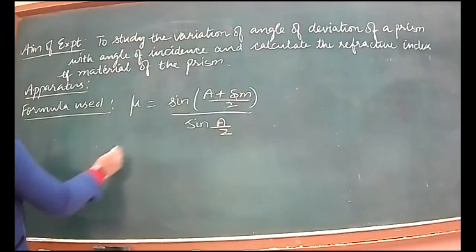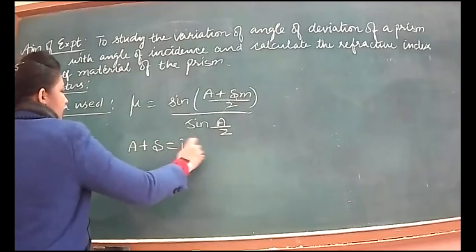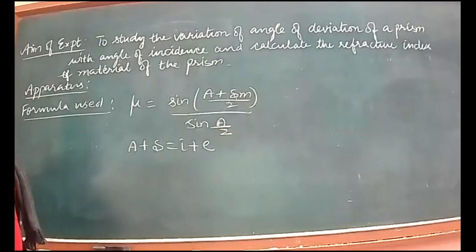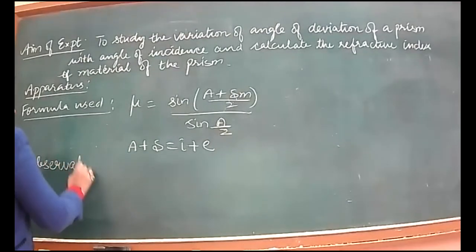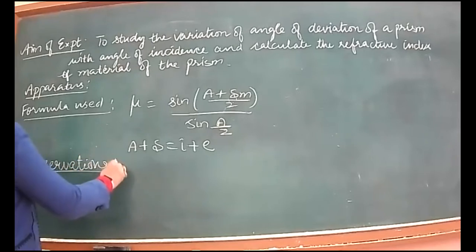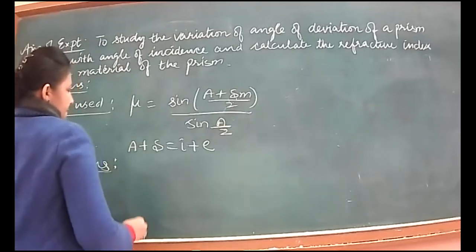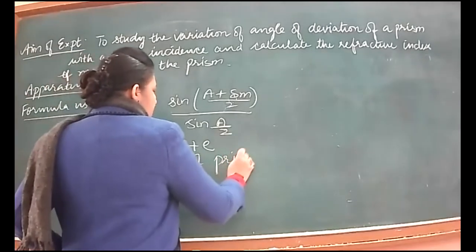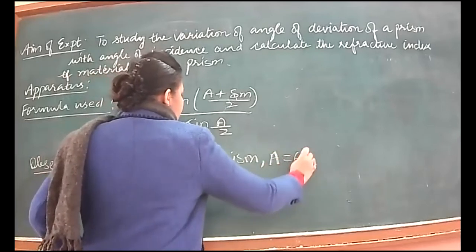Formula used: A plus delta equals I plus E. We proved this in our derivation. To check whether we have fixed the pins correctly, we will check this condition for each case. The angle of prism A we are taking equal to 60 degrees.